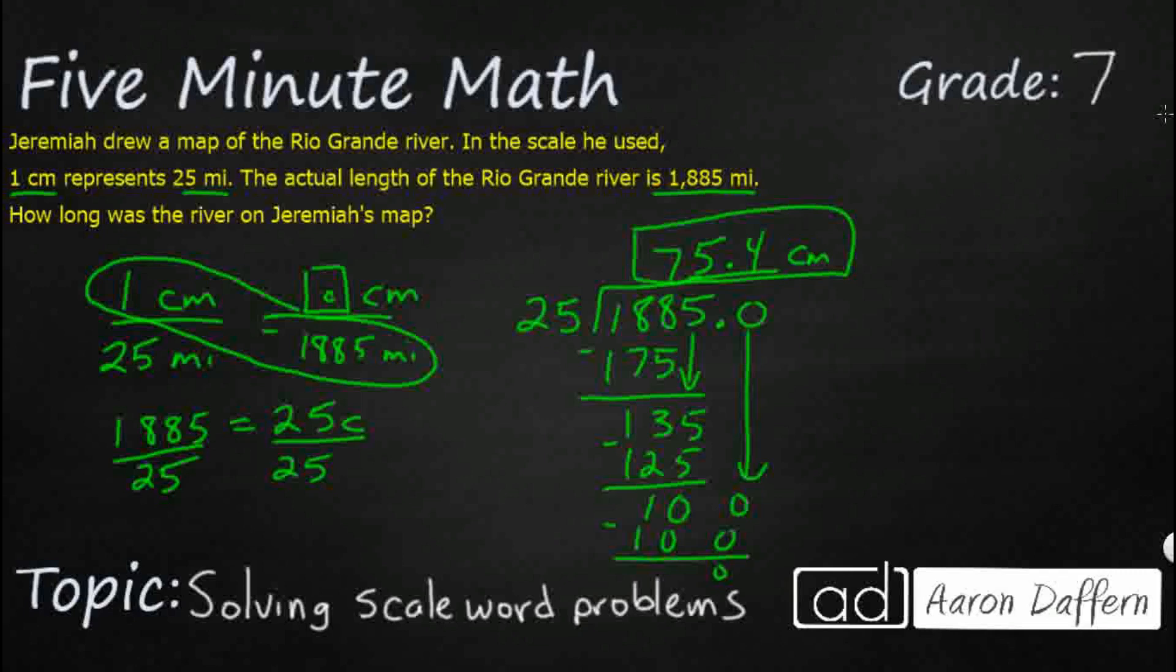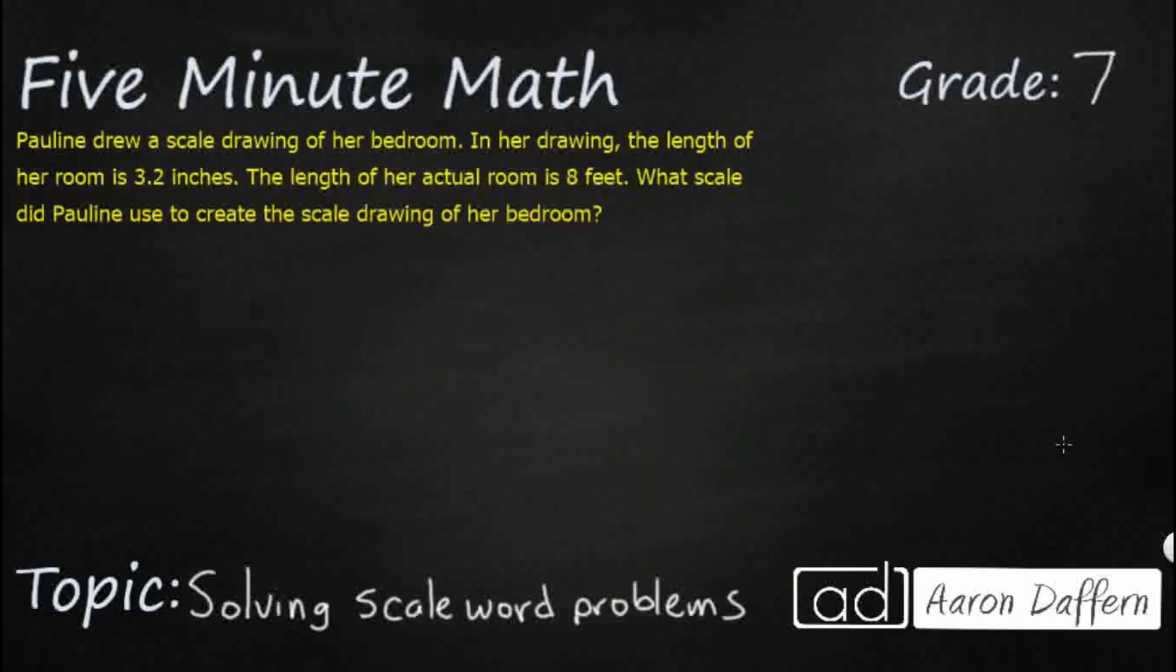Now let's look at another example. So in this problem, Pauline is drawing a scale drawing of her bedroom. So in her drawing, the length of her room is 3.2 inches and the length of her actual room is eight feet. So what scale did Pauline use to create the scale drawing of her bedroom? Well, you might be thinking to yourself, if we're going to use a proportion, we need three numbers and you are correct.